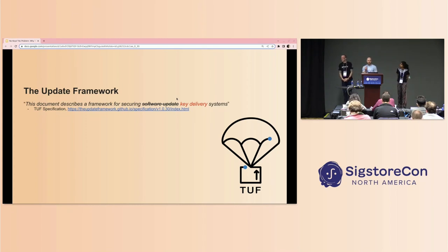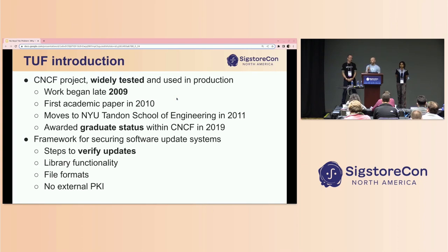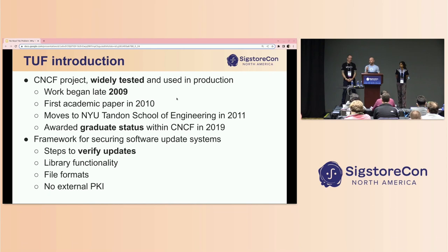The chosen solution is the Update Framework, or TUF. TUF, as we already heard from Ethan, is a framework for securing software update systems. It's an open source project that's been around for a long time and is widely used and tested in a lot of production deployments. Some important things TUF provides: it describes the steps to securely verify an update from a client's perspective, what file formats — or metadata files — are used. Each metadata file corresponds to a specific role, is signed, and has an expiration date. Two important roles are the root role, which defines what keys and roles exist in the system, and the target file, which shows what targets exist.